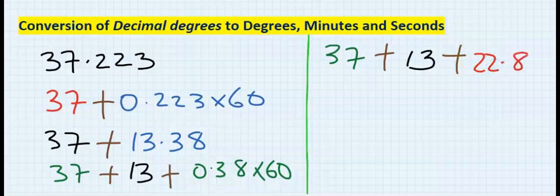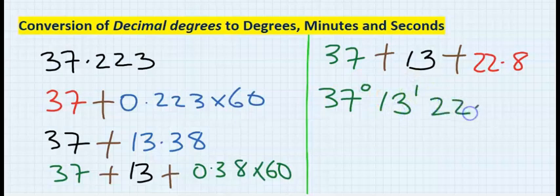The final step is remove the concatenation character. And our final answer is 37 degrees, 13 minutes, 22.8 seconds. Between the degrees and the minutes, and the minutes and the seconds, nothing will be in between them.